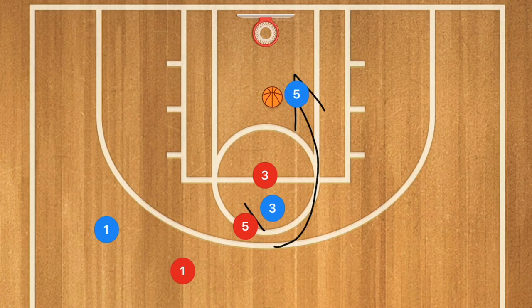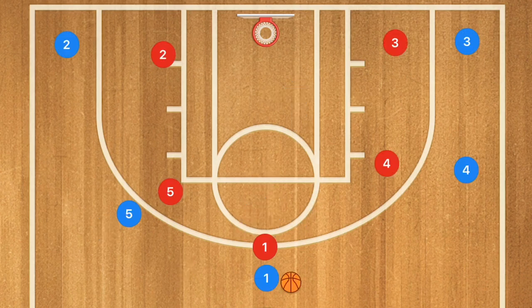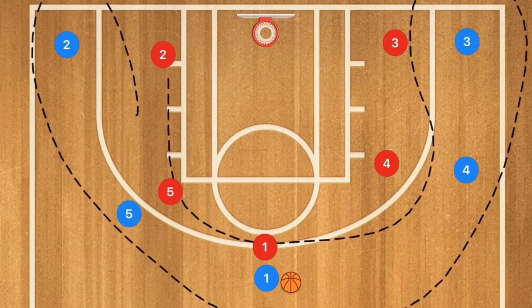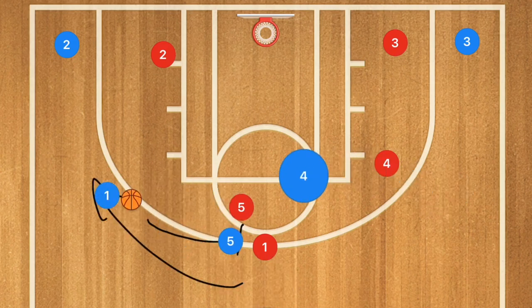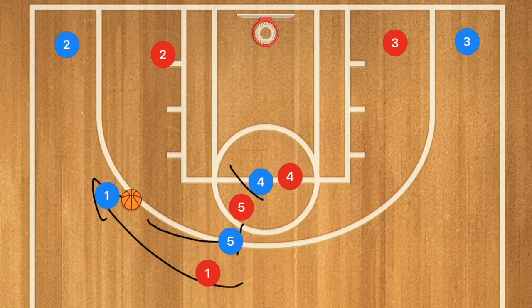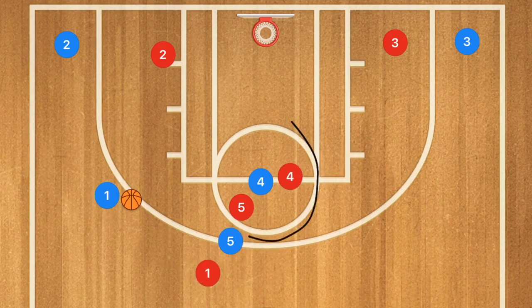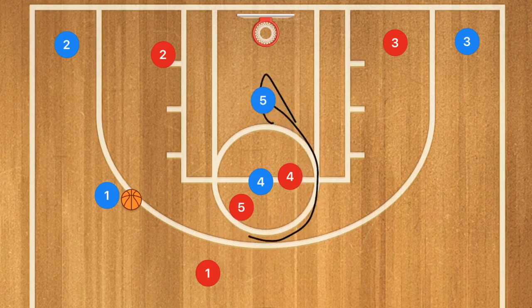Now, how could we use this against our opponent in a game? Here we have a 5-out basketball offense — it's 5-out because there are 5 players outside of the 3-point line. If you're interested in running the 5-out offense, make sure to check out my complete guide in the description below. Basically, what we would have here is Player 5 setting a screen for Player 1. Player 1 would use that screen, and at the same time Player 4 comes in and sets a screen for Player 5 — same idea as before.